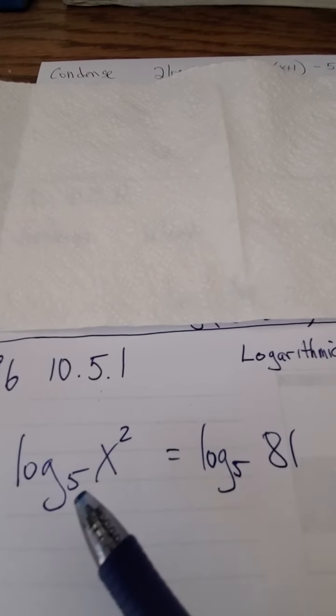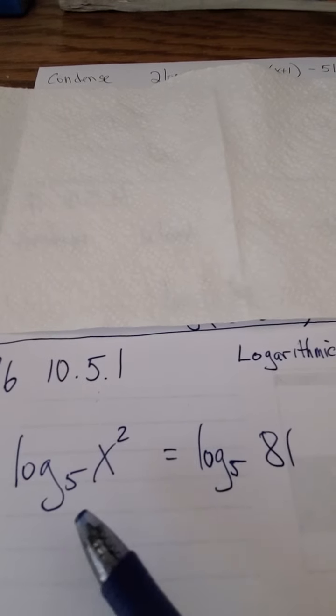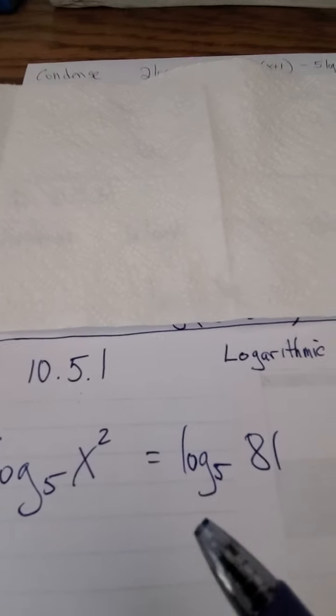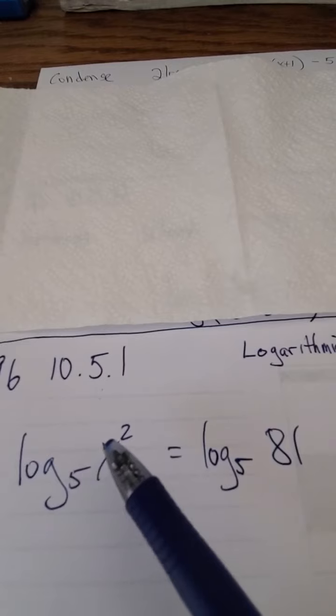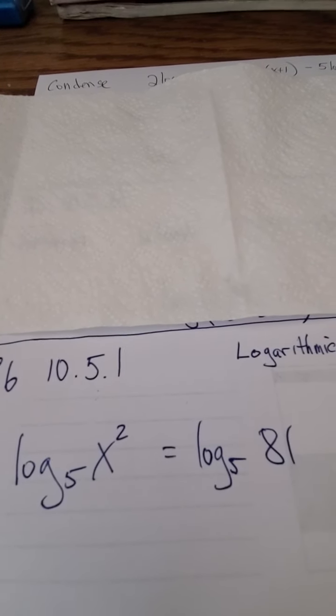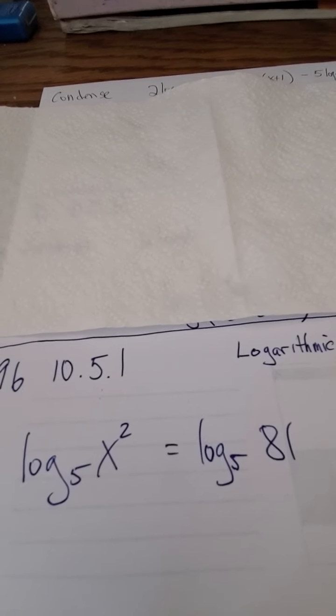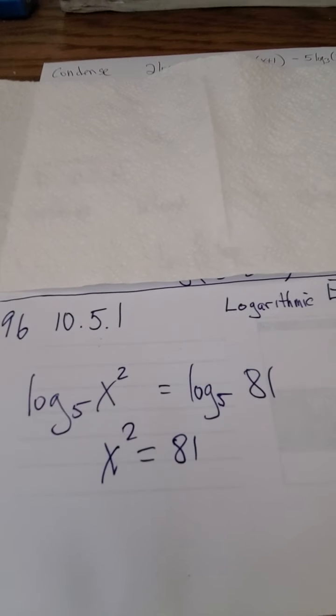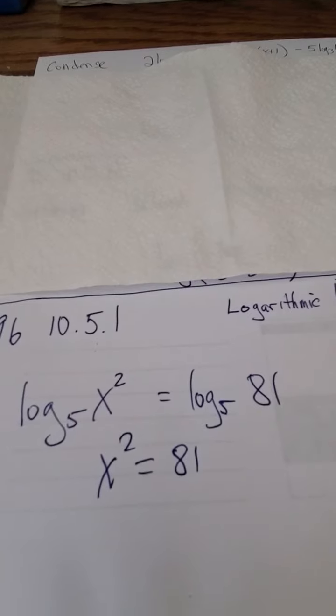If the logs are the same, if the base is five and five, the base is the same, everything's the same, that means what's inside the log has to be the same. That means that the x squared and 81 have to be equal to each other, which gives us a much simpler equation, namely x squared equals 81.